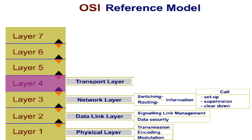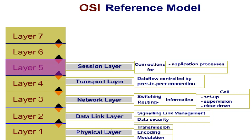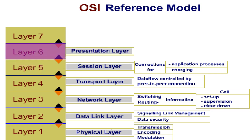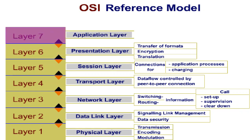Layer four is the transport layer. Here, the peer-to-peer connections data flow is controlled. Layer five is the session layer. It handles the connections for application processes, as well as charging. Layer six is the presentation layer. It takes over the transfer of application-oriented formats, as well as encryption and translation. At the top resides layer number seven, the application layer. It's responsible for the application protocols and the user interfaces.